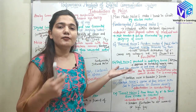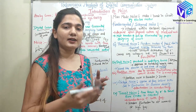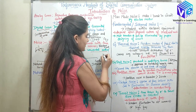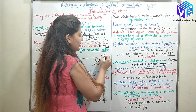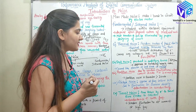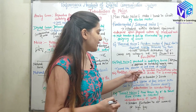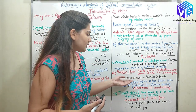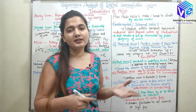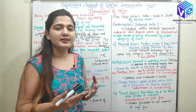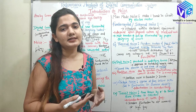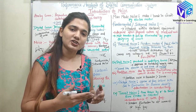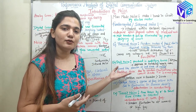Partition noise occurs due to the partition of current into various paths. In a transistor, the current partitions between paths, producing random fluctuations when current divides into two or more paths. Partition noise in a transistor is more than in a diode because a transistor has three terminals while a diode has two, resulting in more current partition and therefore more partition noise in the transistor.